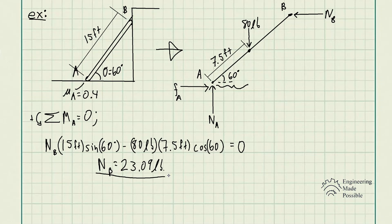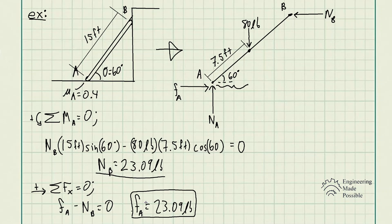For the sum of forces along the x-direction, we only have the frictional force at point A minus the normal force at point B. So FA equals NB, giving us a frictional force at point A of 23.09 pounds.